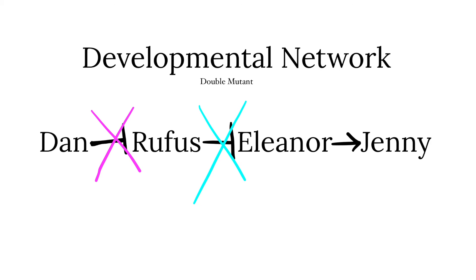In the case of a double mutant in which both Dan and Rufus' gene products are removed, Eleanor is able to activate Jenny due to the absence of Rufus as a repressor. This causes Jenny to be transcribed. Therefore, Jenny is able to pursue her fashion career. Once again, this creates a very happy Jenny.